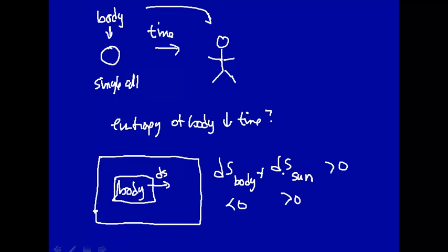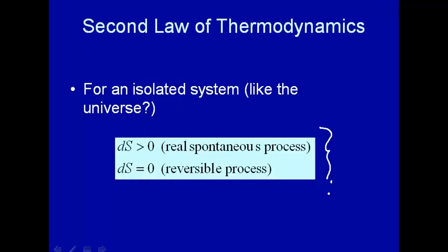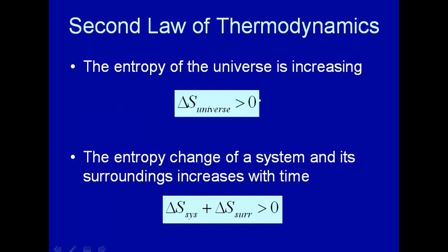We're creating additional entropy in the universe — our surroundings. One might argue that that's a definition of life. In fact, that's an argument that Schrödinger — who we'll talk about in the second part of the course in quantum mechanics — made in the late 1940s: that life itself is the ability of a system to pump out entropy, to decrease its own entropy. Because when we're dead, our body no longer can fight against the second law of thermodynamics. This is the second law: the entropy of the universe is increasing; the entropy change of the system and surroundings increases with time.